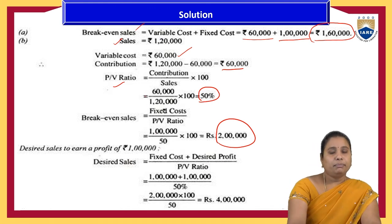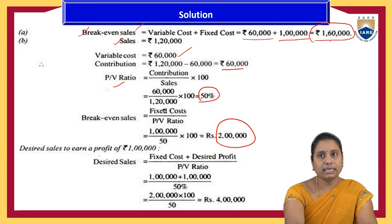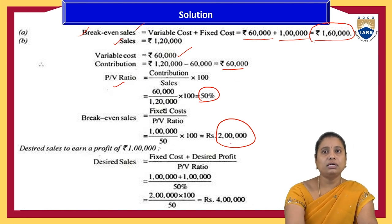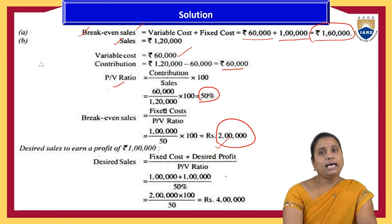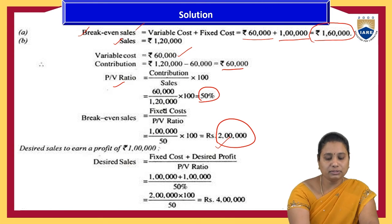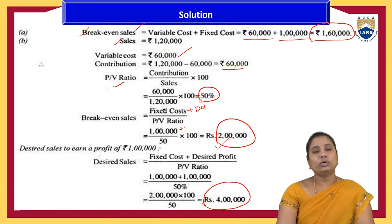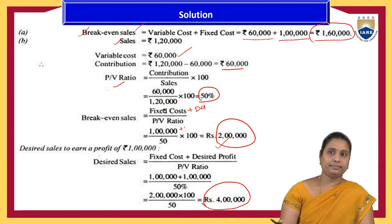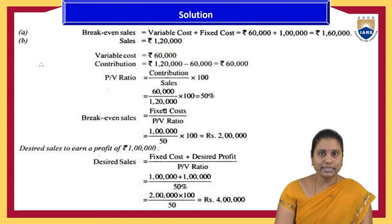Break-even sales are ₹1,60,000 at the same selling price level. For the second case, with the same selling price, the sales volume should reach ₹2 lakhs. Third, if desired profit is ₹1 lakh, desired sales = (fixed cost + desired profit) ÷ P/V ratio = (₹1,00,000 + ₹1,00,000) ÷ 50% = ₹4,00,000. So ₹4 lakhs worth of sales are needed to earn a profit of ₹1 lakh. That concludes the break-even point calculations for various given data and their solutions.